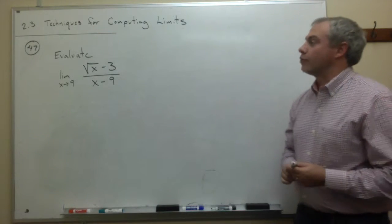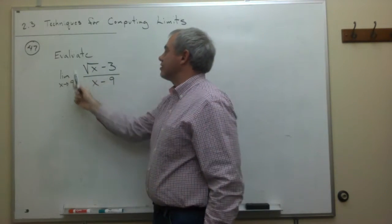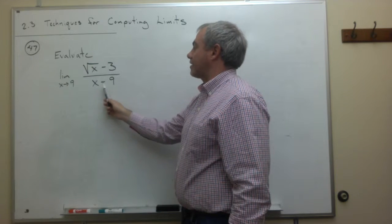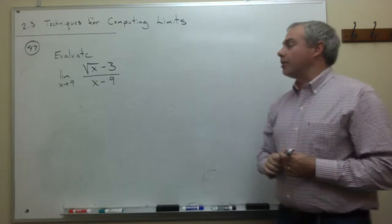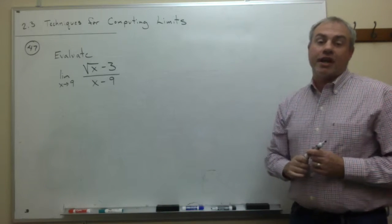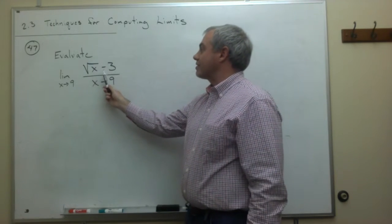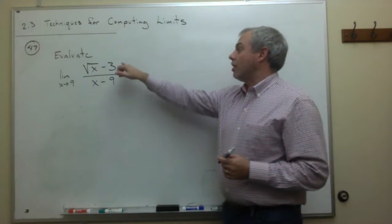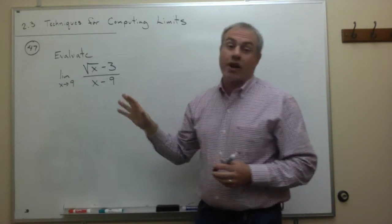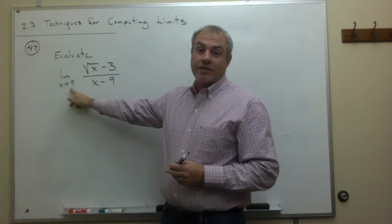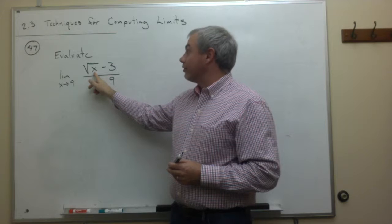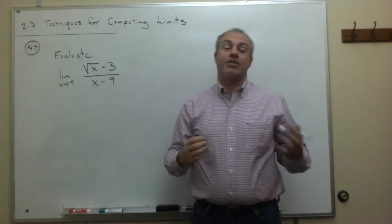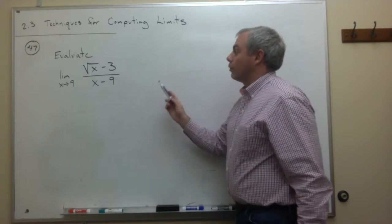The next problem is problem 47, which asks us to evaluate the limit as x goes to 9 of the square root of x minus 3 divided by x minus 9. There are a couple of ways to approach this, but a strategy I cannot use here is just plugging in 9 for x, because that gives the square root of 9 which is 3, minus 3, so 0 over 9 minus 9 which is also 0 — giving us 0 over 0, which is not a valid answer for a limit problem.